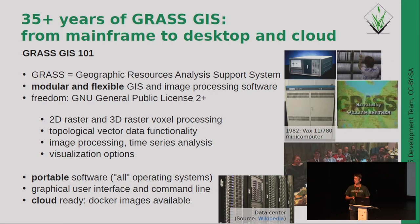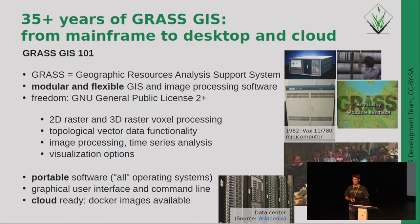This cloud readiness is something we have been working on in the last one or two years — to make Docker images available. On Docker Hub you find ready-to-use Docker images: GRASS with Python 3 and PDAL, for example, a full implementation of GRASS as an Alpine image with only 80 megabyte size if you want something small. Just take a look.